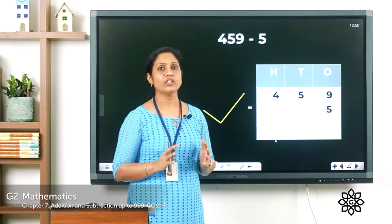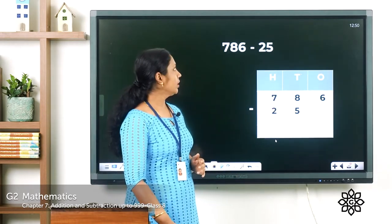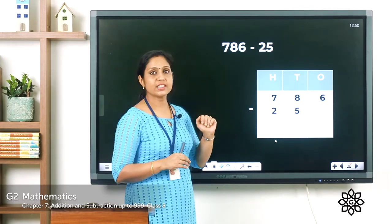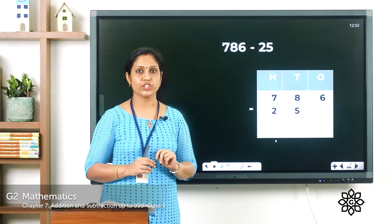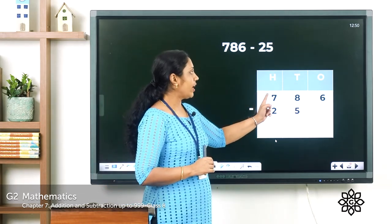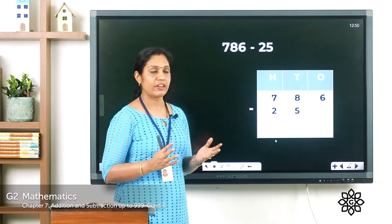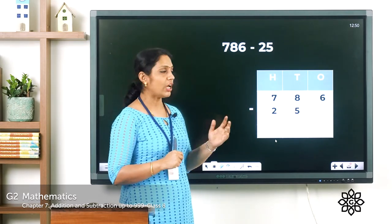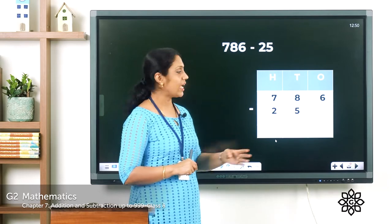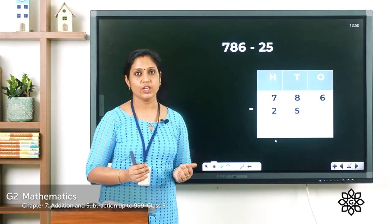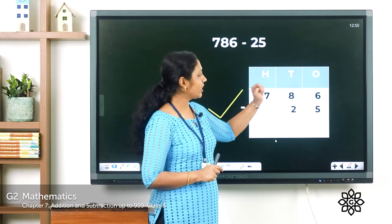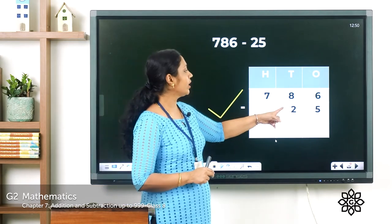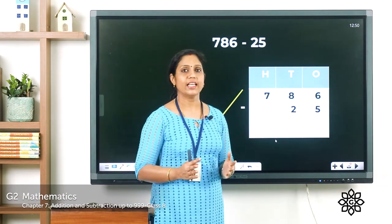Now 786 minus 25. 786 is a three-digit number with 7 hundreds, 8 tens, and 6 ones. 25 is a two-digit number with 2 tens and 5 ones. If 2 is written under the hundreds place and 5 under the tens place, that is incorrect. The correct placement is 2 under the tens place and 5 under the ones place, giving us 2 tens and 5 ones. Then we subtract.